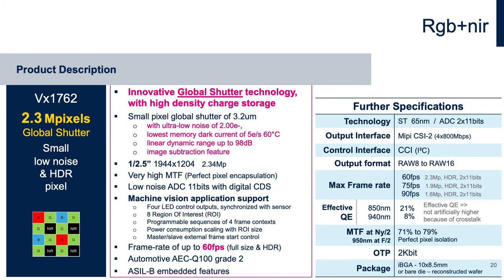This page shows the general specifications for the Robin sensor RGB IR, part number 1762, 2.3 megapixels. It is a small, low-noise sensor that enables both subtraction and high dynamic range. The pixel size is 3.2 microns, with effective QE of 8% at 940 nm and 21% at 850 nm. The MTF at Nyquist divided by two is 71% to 79%. Because we have perfect pixel encapsulation, we have this high MTF. There's 2K of OTP on the package and it's available in die form or IBGA.